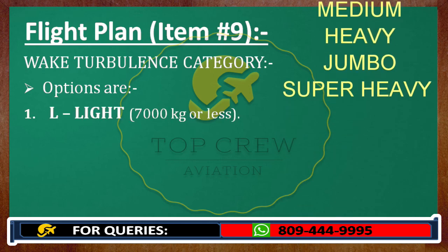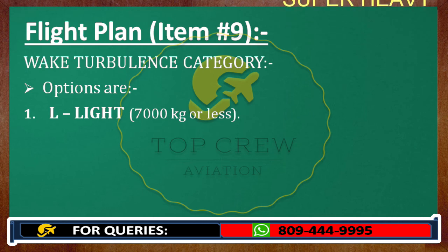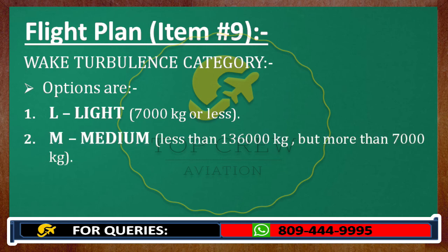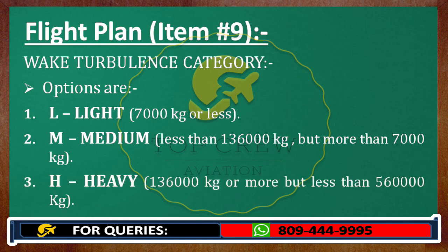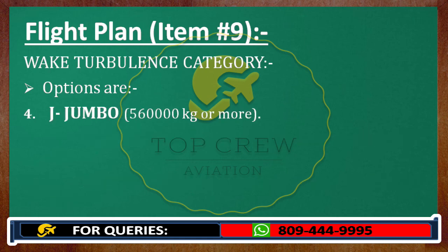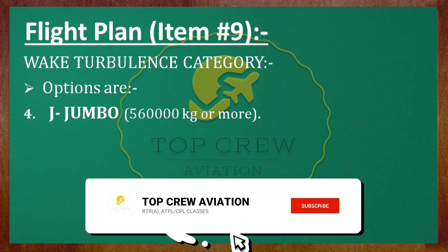Light is when your aircraft's maximum certified takeoff mass is 7,000 kg or less. Medium is when it is more than 7,000 kg but less than 136,000 kg. Heavy is when your weight is 136,000 kg or more but less than 560,000 kg. Jumbo is when your aircraft's weight is 560,000 kg or more.